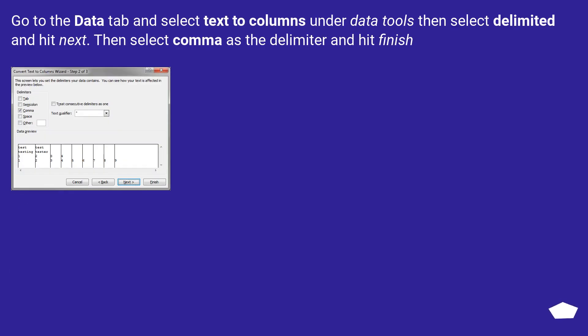Another solution: go to the Data tab and select 'Text to Columns' under Data Tools. Select 'Delimited' and hit Next, then select comma as the delimiter and hit Finish.